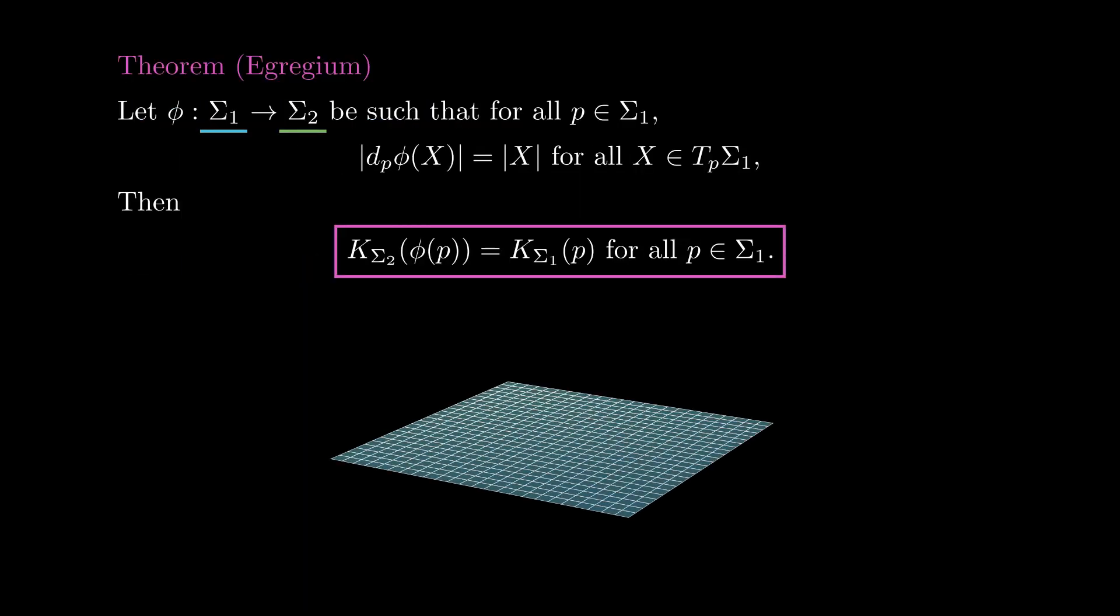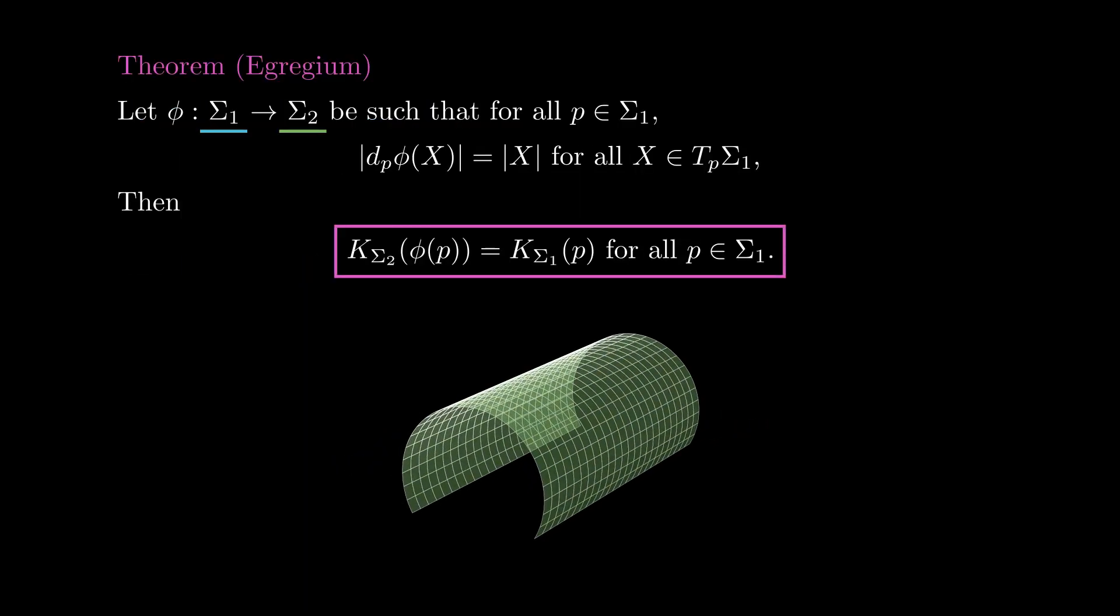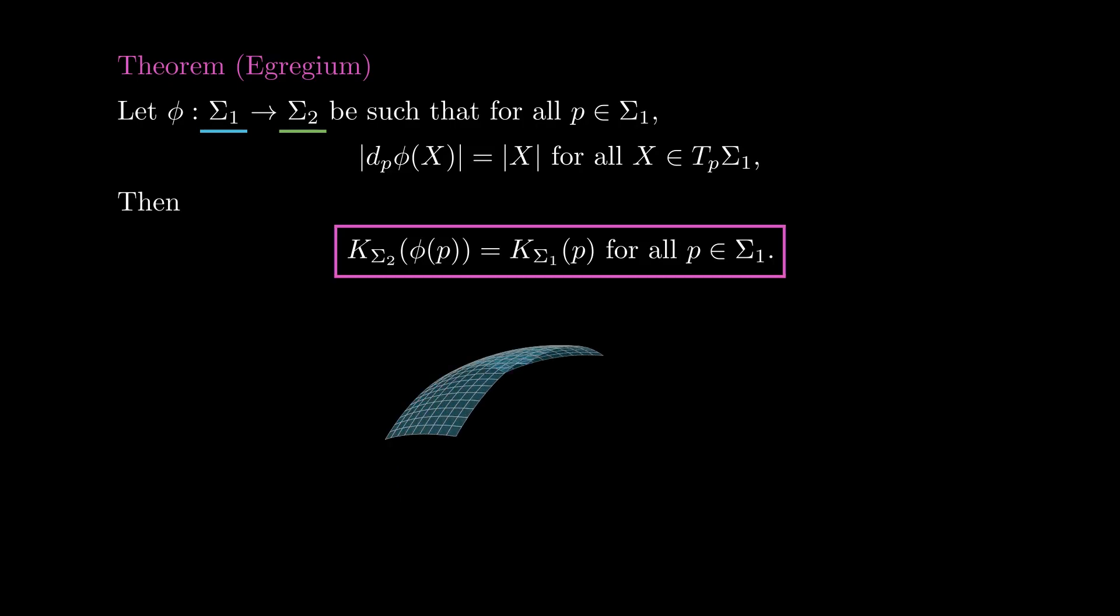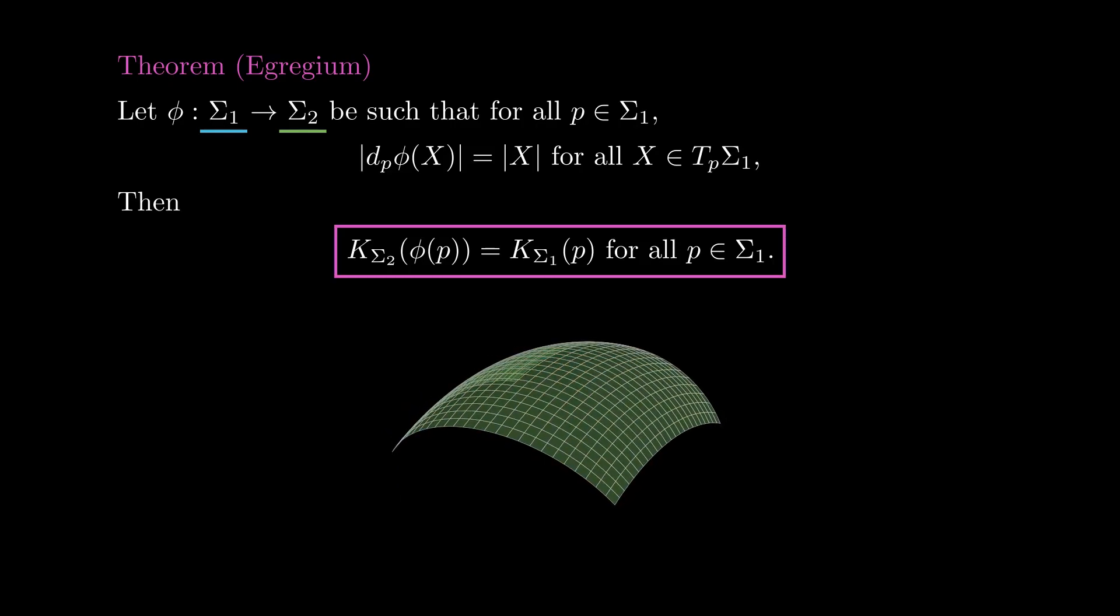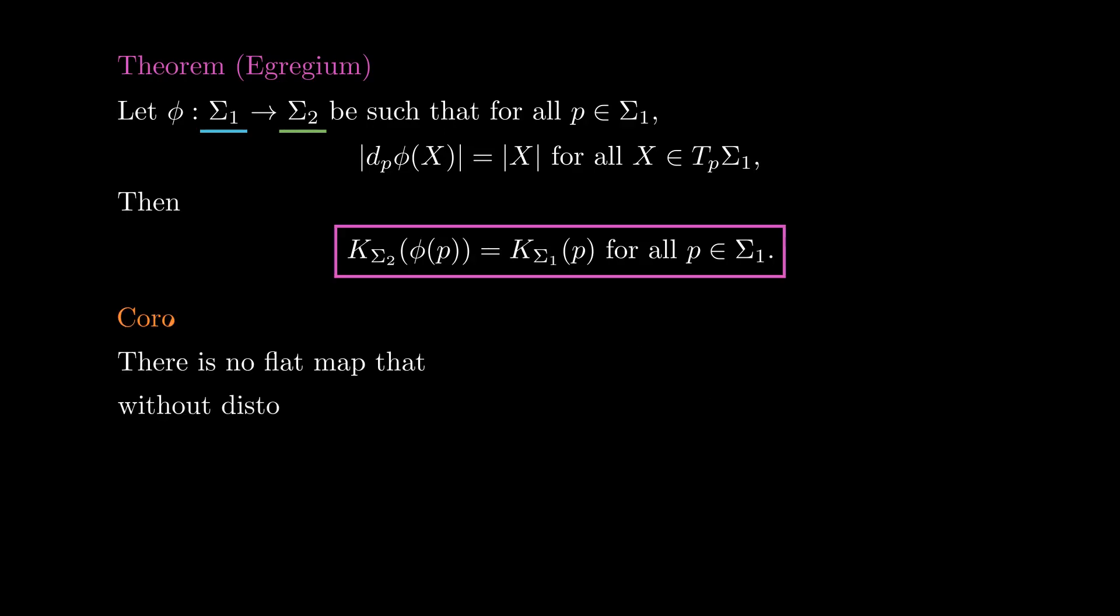This theorem implies that if we deform a surface without stretching or contracting, the curvature doesn't change. In particular, there cannot exist a flat map that does not distort the shape of the Earth, because the curvature of the flat plane is distinct from the curvature of the Earth.